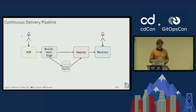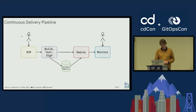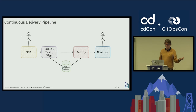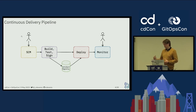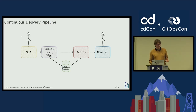To introduce CD Events, let's start with a pretty standard continuous delivery pipeline. You start with an SCM like GitLab or GitHub where you have your code, then you go through build, test, and signing, and you produce some artifact that is stored in an artifact registry.